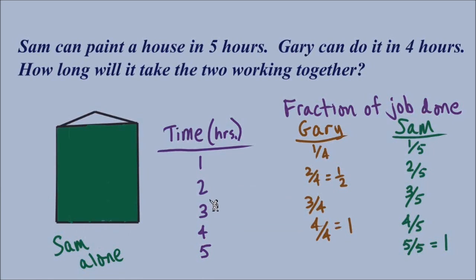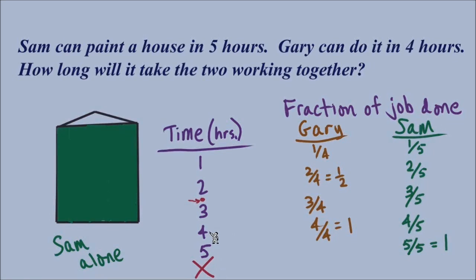Let's go back to the unknown number for the time it will take Gary and Sam working together. We know it's just a little more than two hours, but since it's unknown let's call it x. We want an expression for the fraction of the job done. Observe the pattern: the time passed is in the numerator, and the denominator is always four for Gary because he can do the entire job in four hours. So the fraction of the job Gary does after x hours is x over four, or x-fourths.